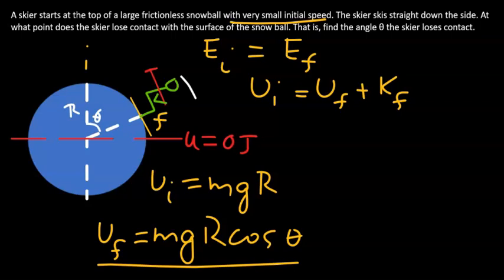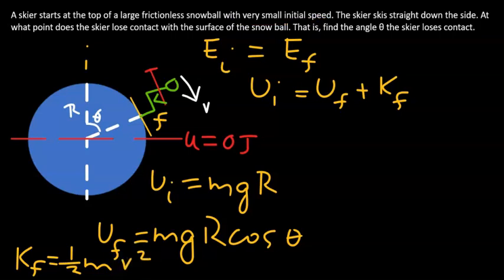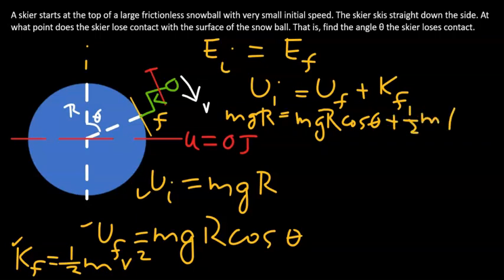Let's assume at that point where the skier loses the contact, the skier's speed at that point is v. What that means is the kinetic energy at that point, namely the final kinetic energy of that skier, is half times the mass times v squared. So let's put all these terms in this equation. So Ui is mgR, Uf is mgR cosine theta, and Kf is half m v squared.